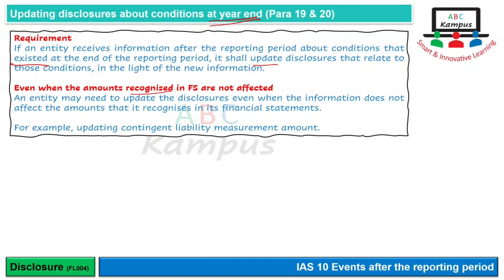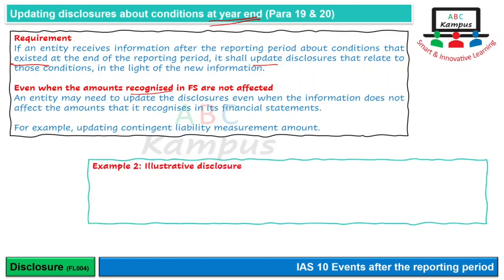مثلاً ایک entity پر case ہو گیا، lawyer نے کہا صرف 20% chance ہے کہ ہم ہار جائیں اور اگر ہار گئے تو 4 million دینے پڑیں گے۔ Year end کے بعد ایک اور related case کا فیصلہ ہوا جس میں ایک entity کو 5 million کی penalty دینی پڑی۔ ہمارے lawyers کا کہنا ہے کہ ہمارا case اس لحاظ سے different ہے کہ ہم نے default نہیں کیا، تو ہمیں payment نہیں کرنی پڑے گی۔ لیکن کوئی recognized amount ہم change نہیں کر رہے۔